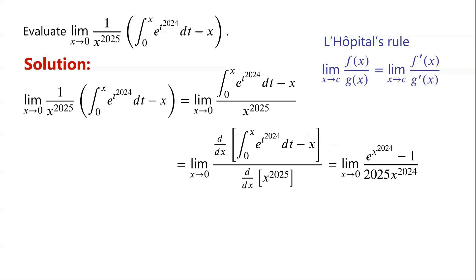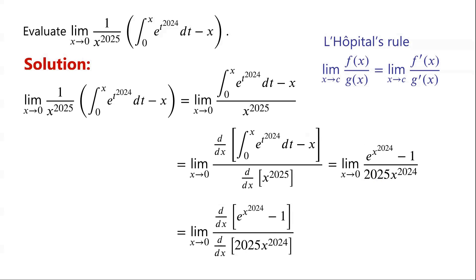So the limit is still in an indeterminate form. By applying L'Hôpital's rule again, the limit is equal to the limit of the derivative of e to the power of x to the power of 2024, minus 1, with respect to x, over the derivative of 2025 times x to the power of 2024, with respect to x, as x tends to 0.